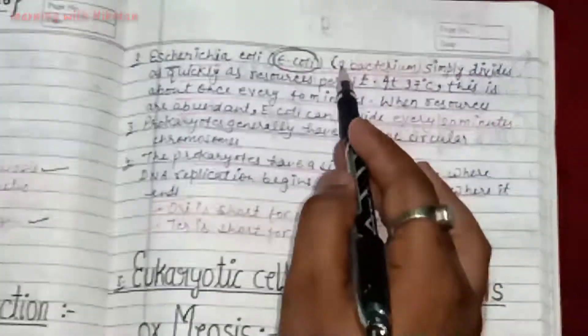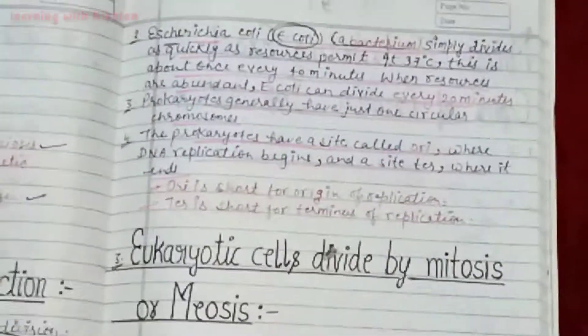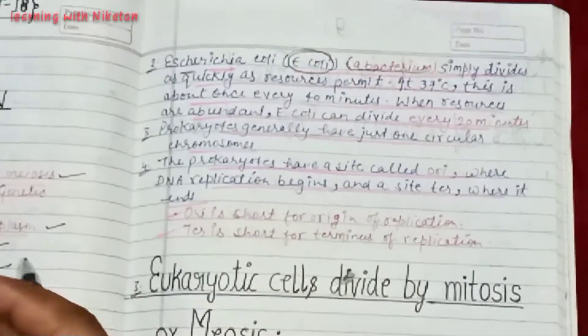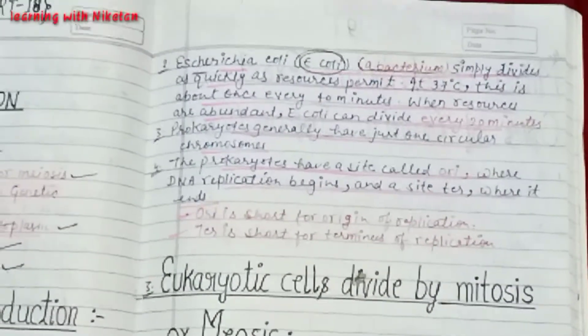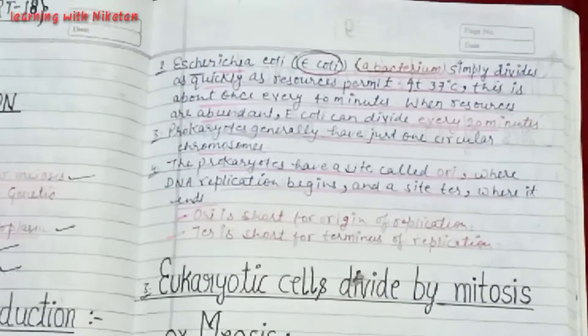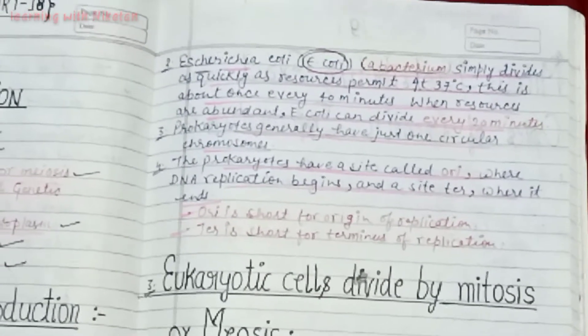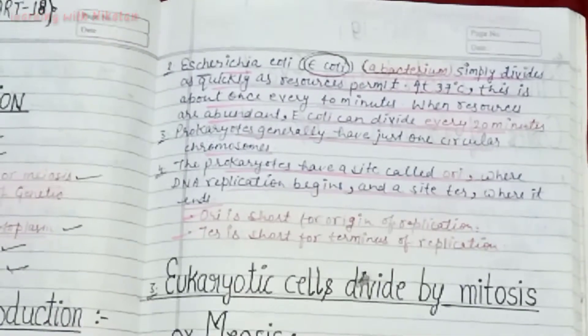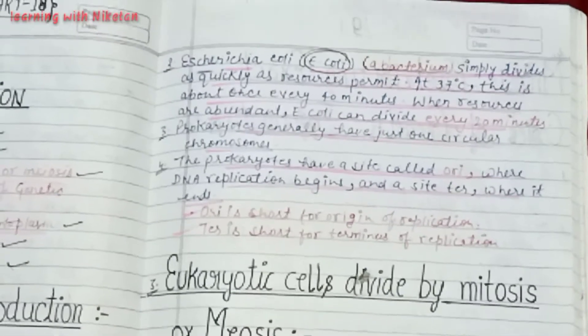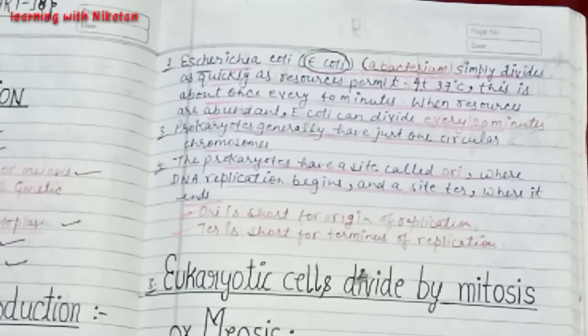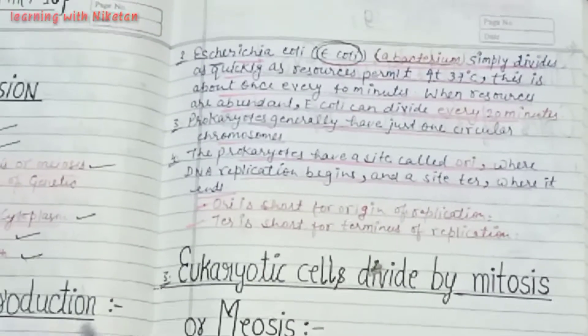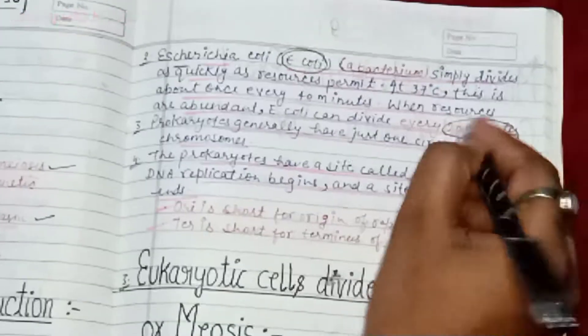The next thing is E. coli — the full form of E. coli is Escherichia coli — a bacterium. It simply divides as quickly as resources permit at 37 degrees centigrade, about once every 40 minutes. While resources are abundant, E. coli can divide every 20 minutes. This is the specialty of the E. coli bacteria — it divides every 20 minutes.